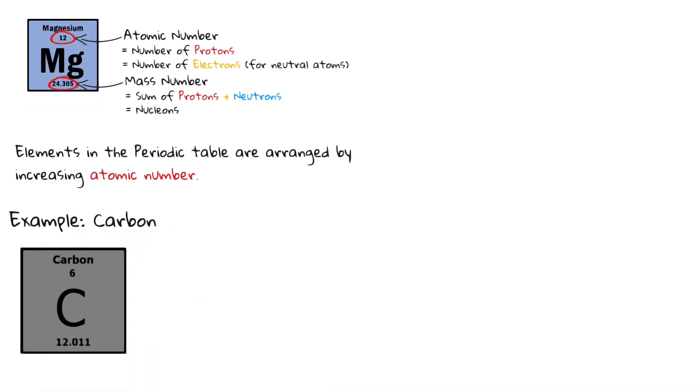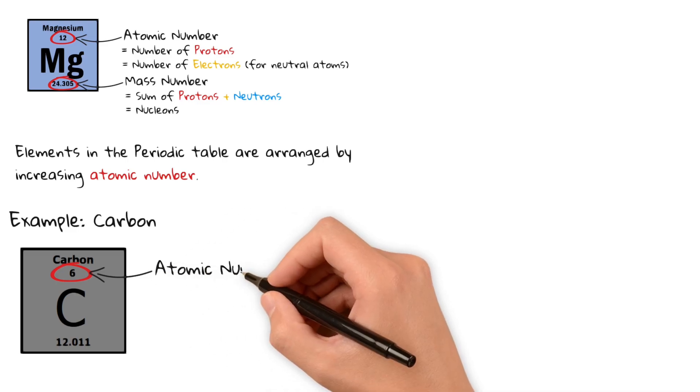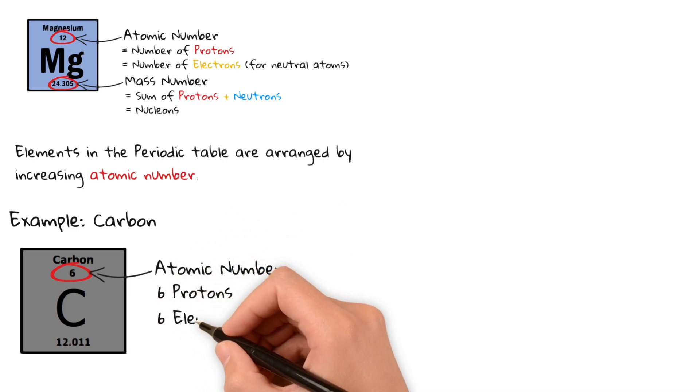Remember that the number of protons and the number of electrons is equal for neutral atoms. Take carbon as an example. Carbon has the atomic number six, meaning six protons and six electrons.